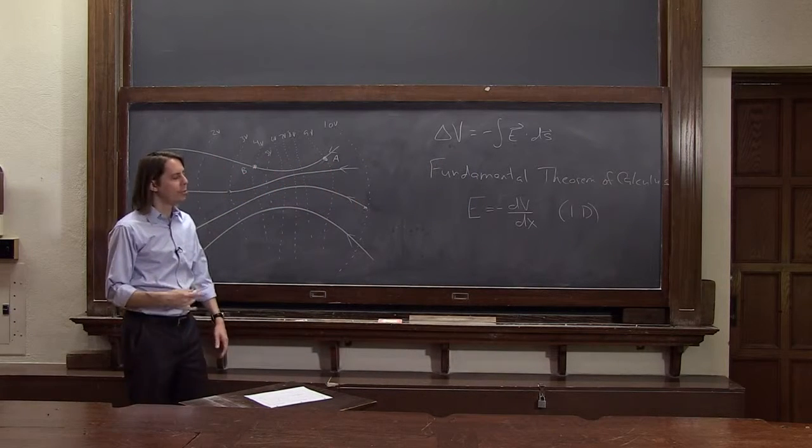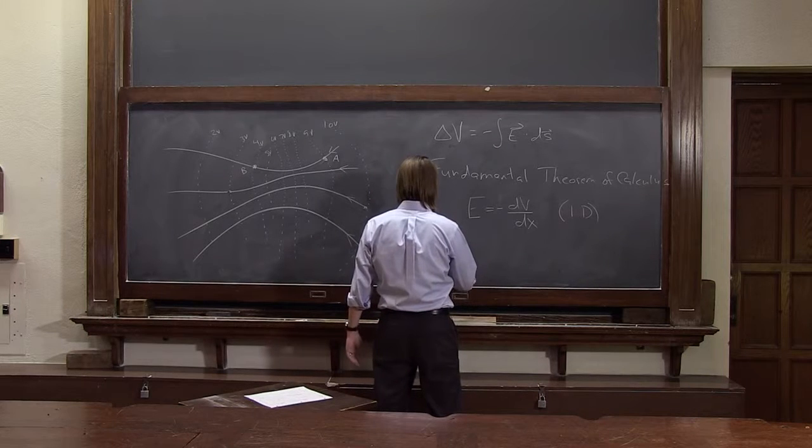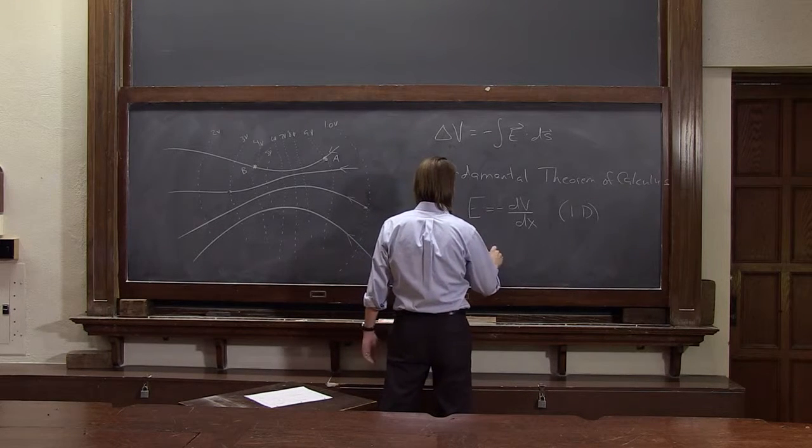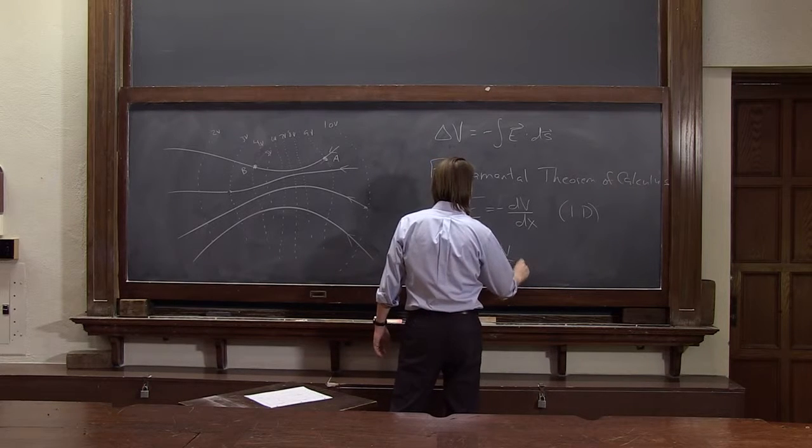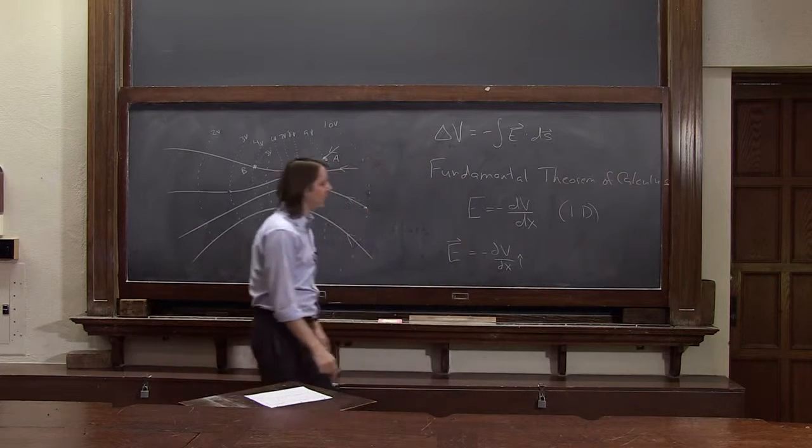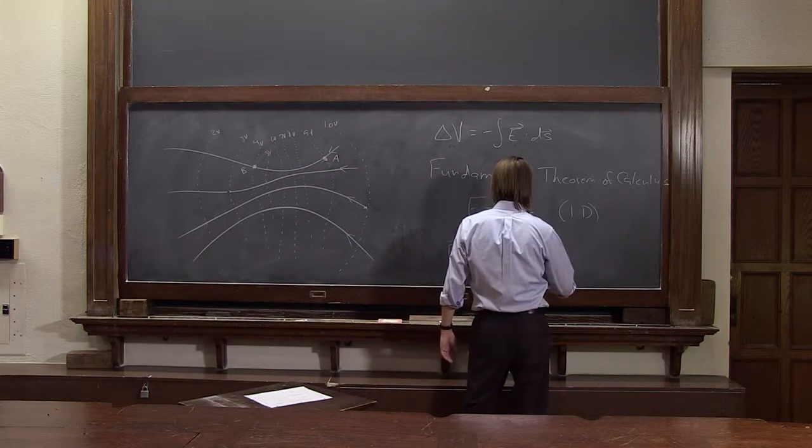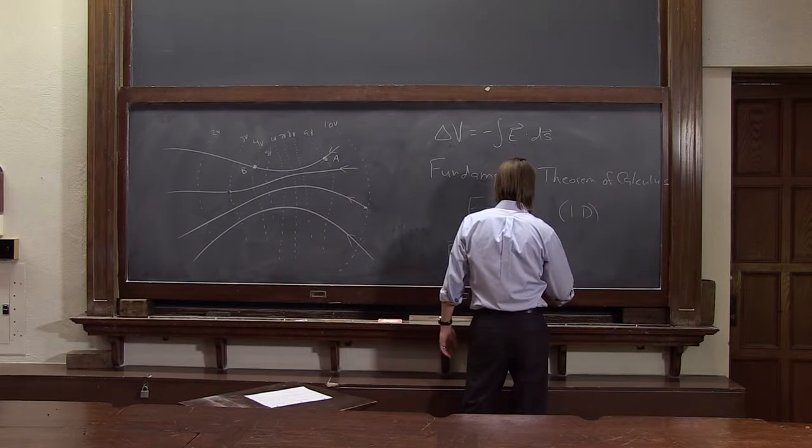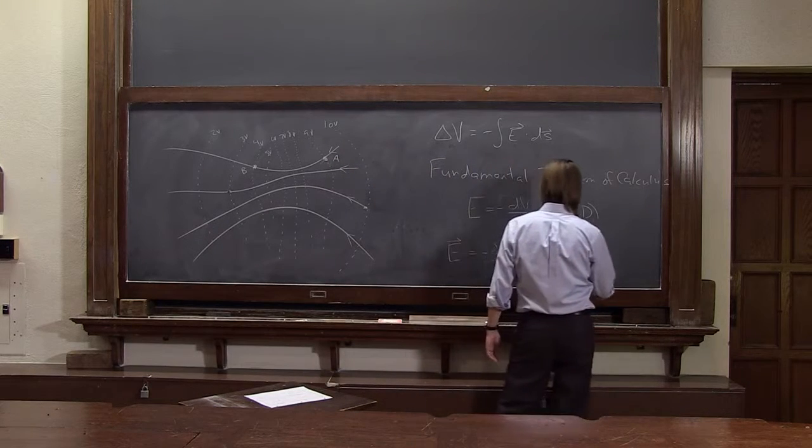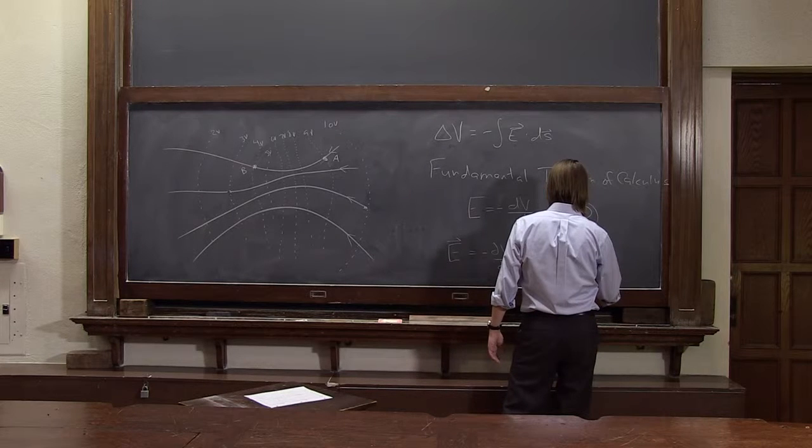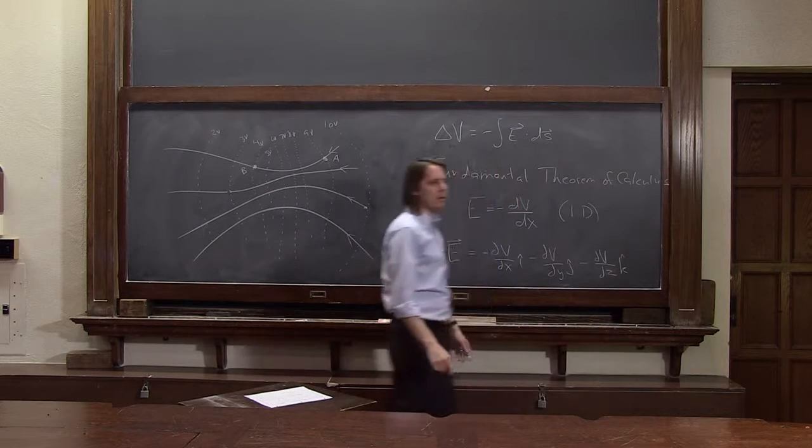If you want to do the full 3D vector calculus version in Cartesian coordinates, it would look like this. And this may kind of make sense to you. Minus the derivative of V in the x direction - that's the x component. Minus the derivative of V in the y direction - that's the j component. And minus the derivative of the field V in the z direction - that's the k component.